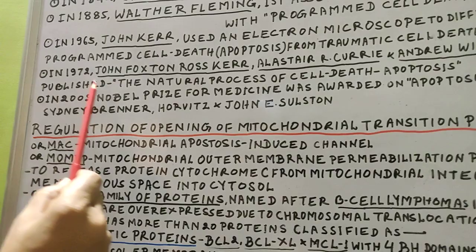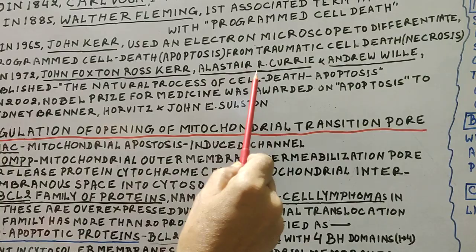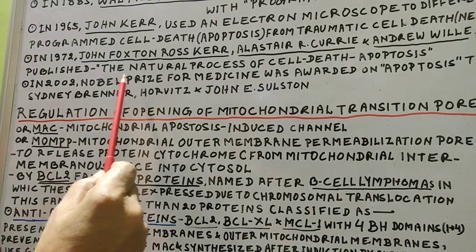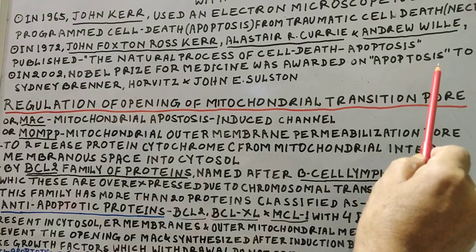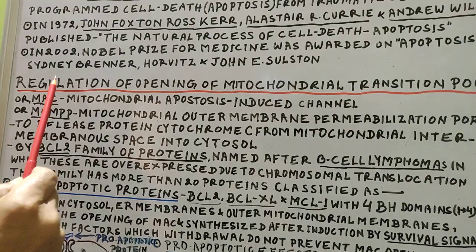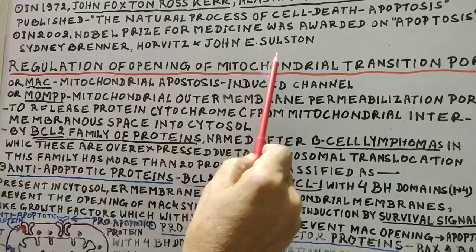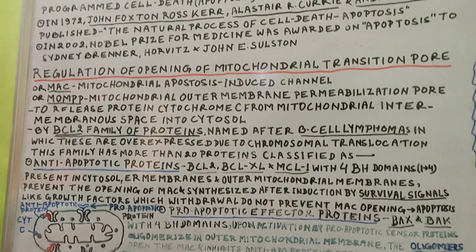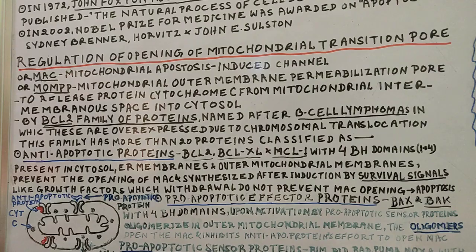In the year 1972, John Foxton Ross Kerr, Alistair R. Curry, and Andrew Wyllie published a paper on the natural process of cell death — apoptosis. And in the year 2002, the Nobel Prize for Medicine was awarded jointly to Sydney Brenner, H. Robert Horvitz, and John E. Sulston for their work on apoptosis. You should remember these facts as they may come into your tests.